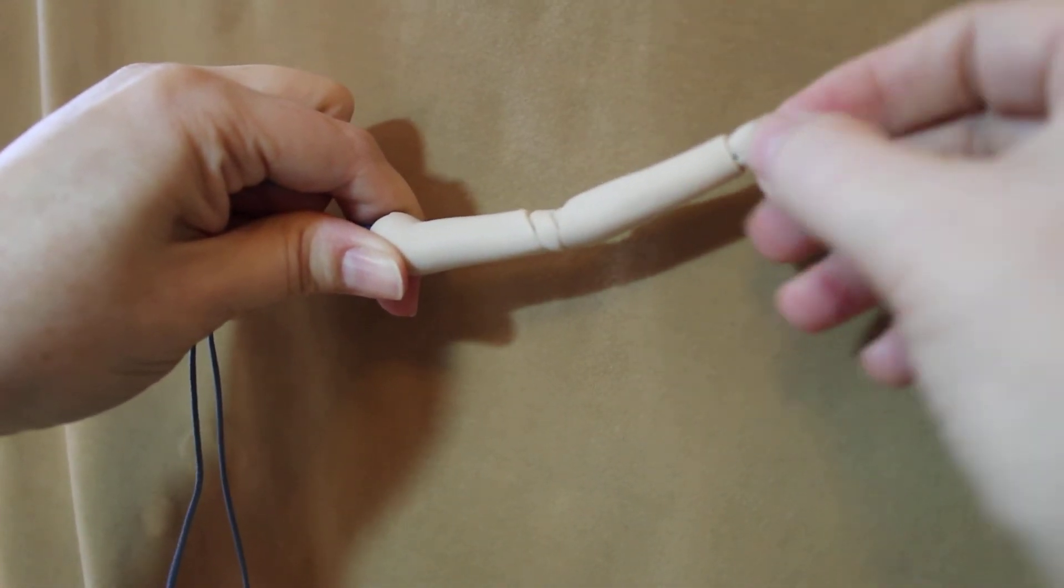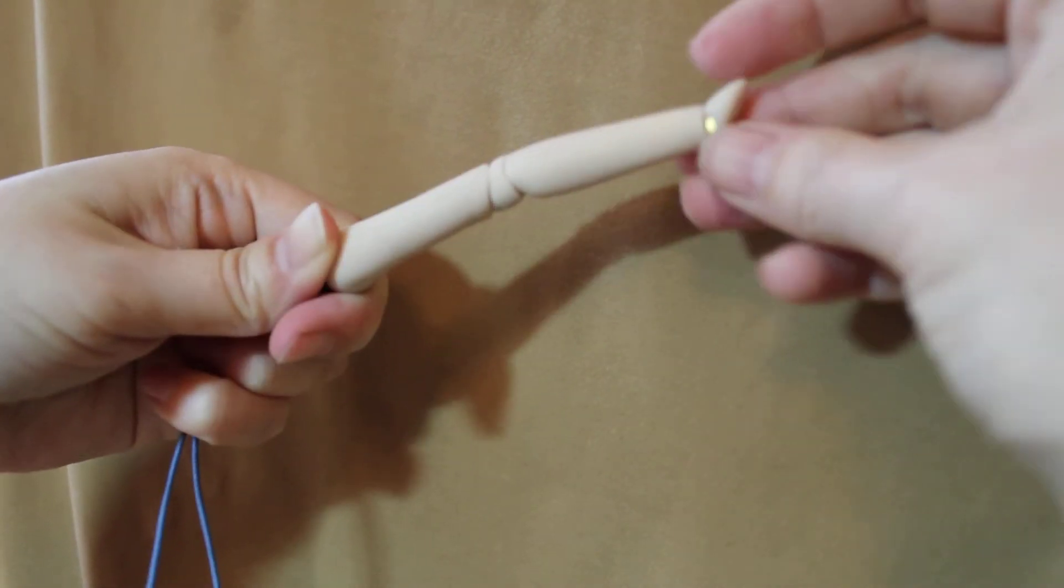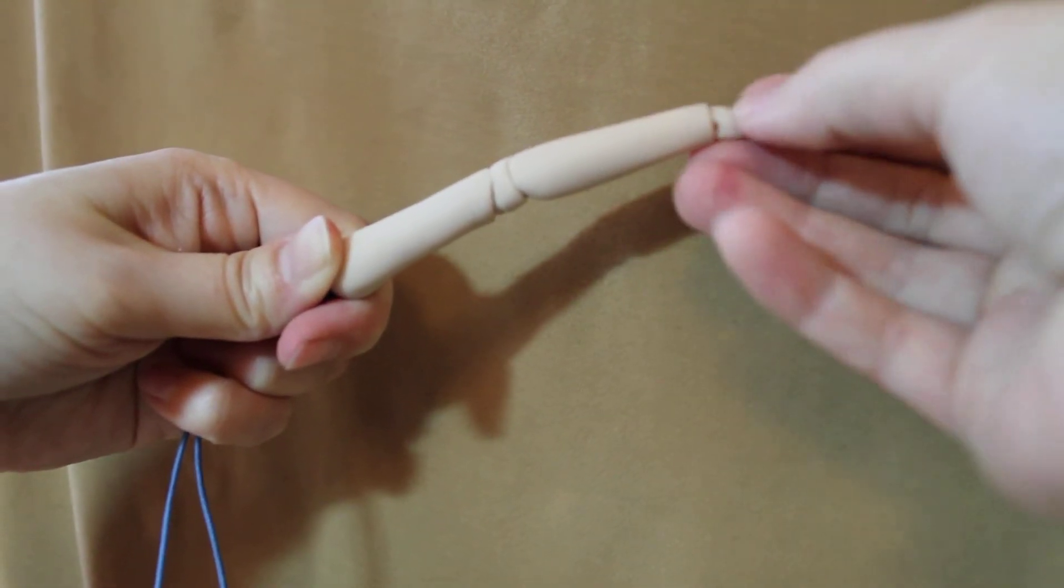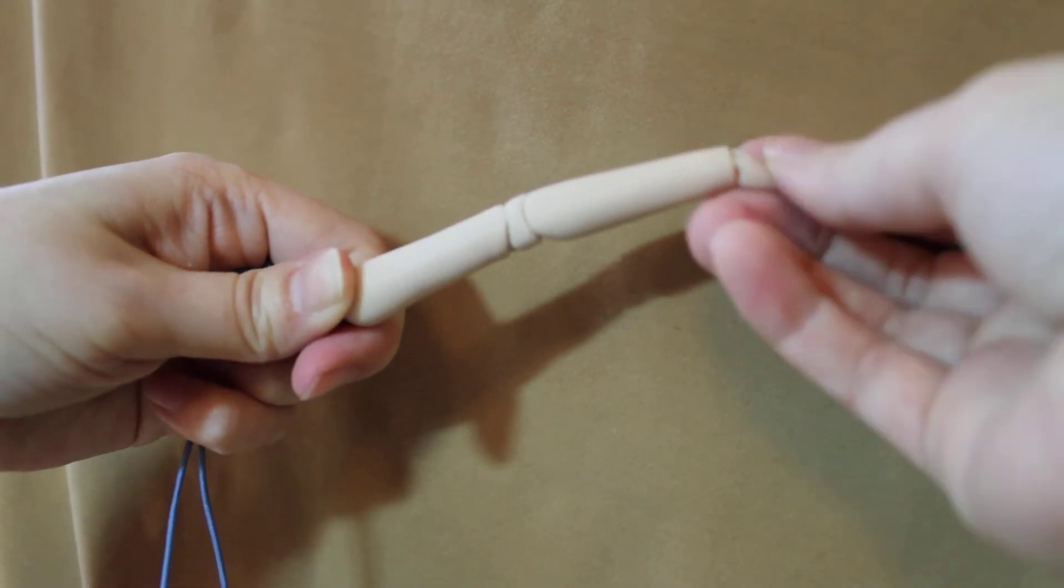So here's the arm flap. Here's the hand flap that will act as a wrist. You can see how it moves pretty easily through here.